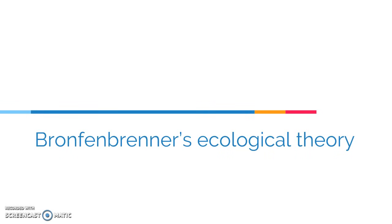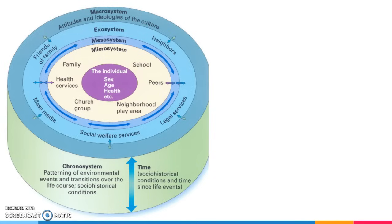I really like to use this theory as a model as we go throughout the course because it really is just such a good way of getting people to think about how complicated human development is. People often want really simple answers to complicated questions like why people do drugs. Well, if there was one reason why people did drugs we would have solved that problem by now. Clearly there is a much more complicated answer and it's going to be different reasons for different people. And so that's where this theory comes in — it helps us to think about the different types of influences on human behavior.